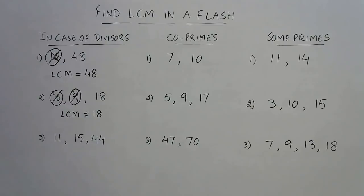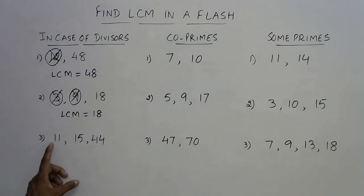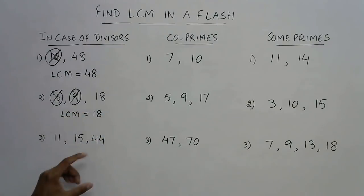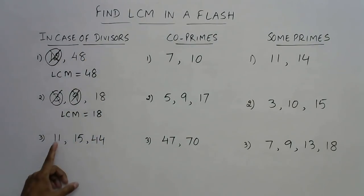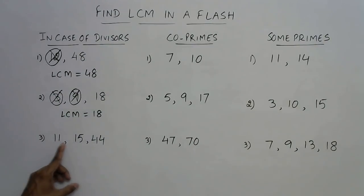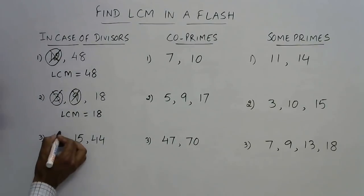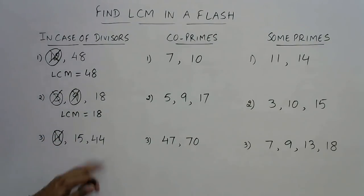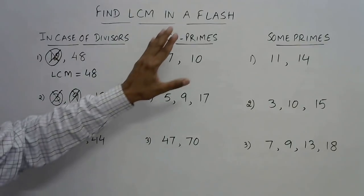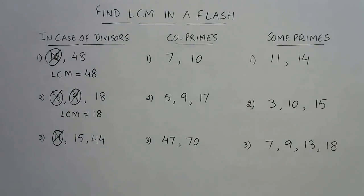In the case of three numbers like 11, 15, and 44, finding the LCM can be a little tricky with the traditional approach, but with this method things are very easy. Here we have 11 and 44 — 11 is an exact divisor of 44 — so from these three numbers we can just eliminate 11. You are left with only two numbers to deal with: 15 and 44. I will take up the final answer to this question after I explain the co-prime part.